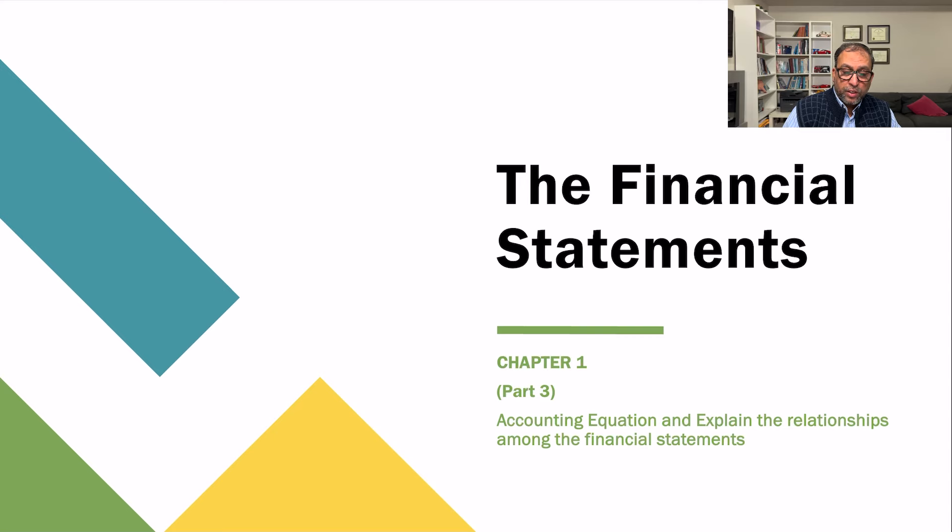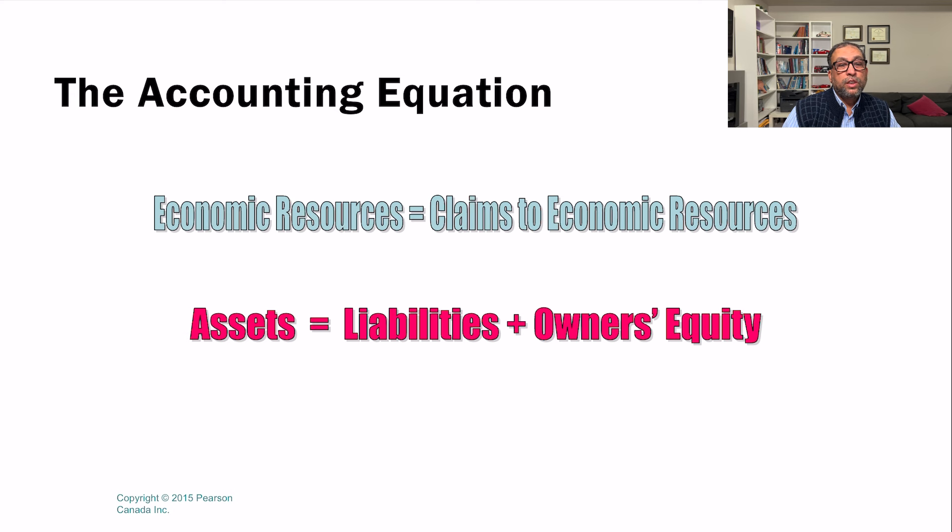In this part of the financial statements chapter, we focus on the accounting equation. As we saw in the balance sheet, assets are on one side and liabilities plus shareholders' equity are on the other side. Liabilities plus shareholders' equity must equal assets — this is what we call the accounting equation, and it explains the relationship among the financial statements.